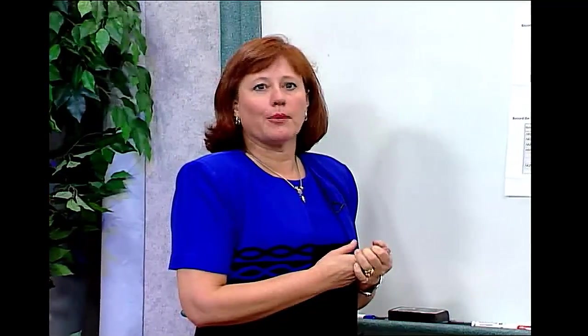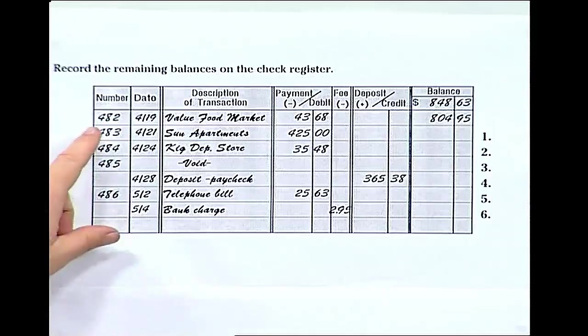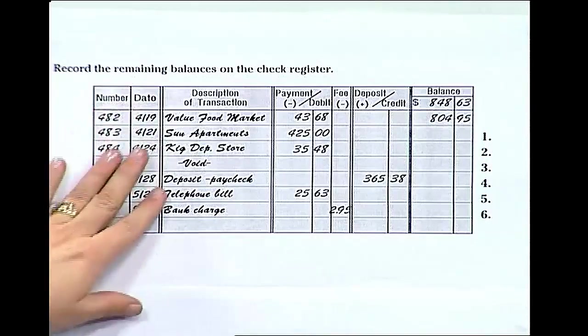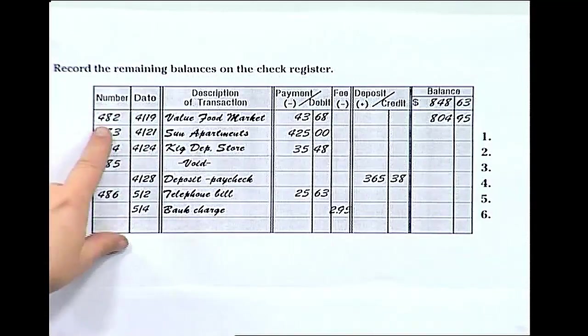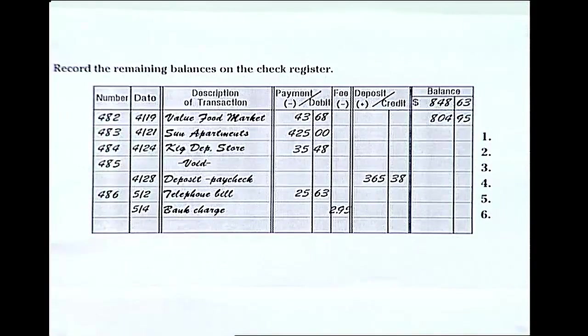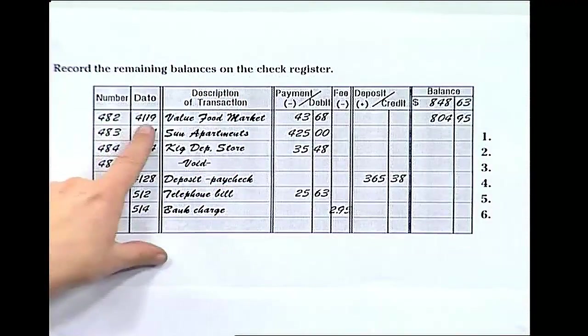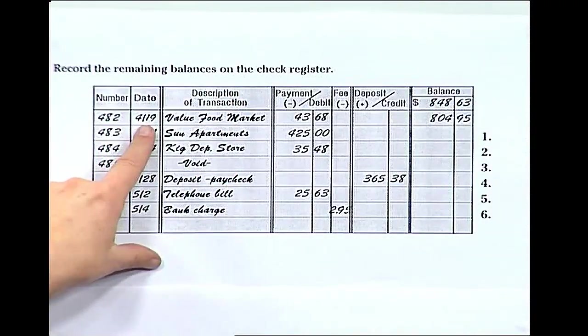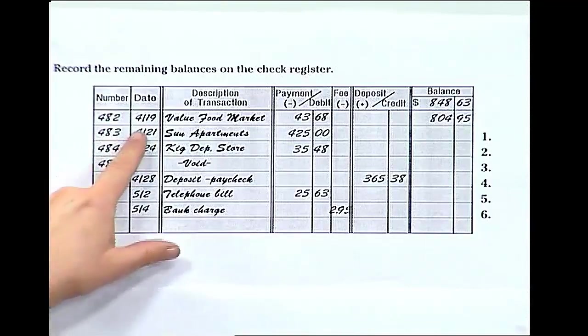There are three transactions that can happen in your checking account that will affect your balance. The first transaction is called a debit. These are the checks that you write. You can see that I've written some checks into this check register, and here's the information that you'll want to write down. On the left-hand side, you'll want to write the number of the check. Each of your checks will have a number on it, and we want to be careful to record which check we're talking about. In the next column, you're going to want to write the date that you wrote the check so you know exactly when that money was taken out of your account.